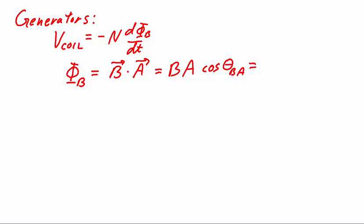If we assume that the loop is moved with a constant angular velocity then we can simply replace the theta by omega t. It's then a simple matter to deduce the voltage on the coil by taking negative n times the time derivative of the previous expression.